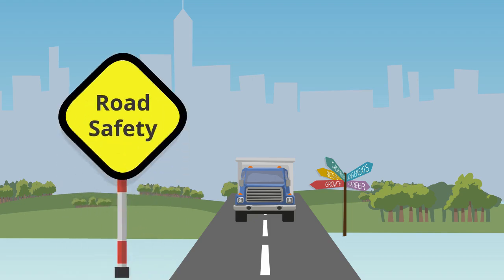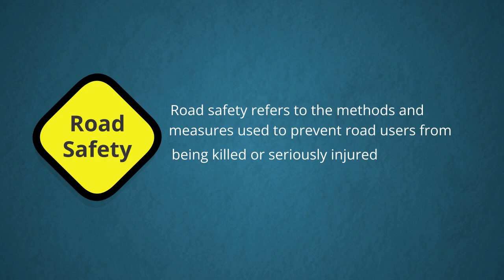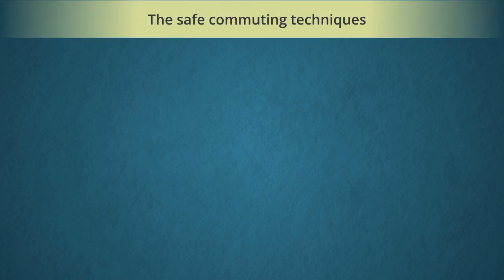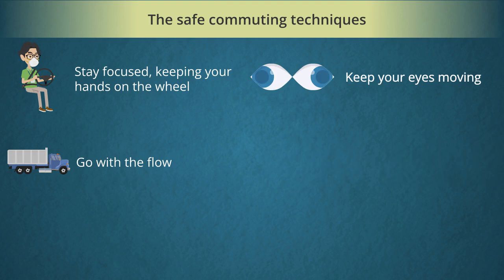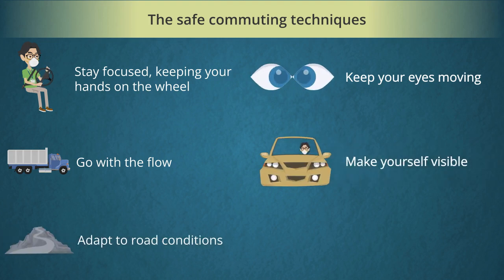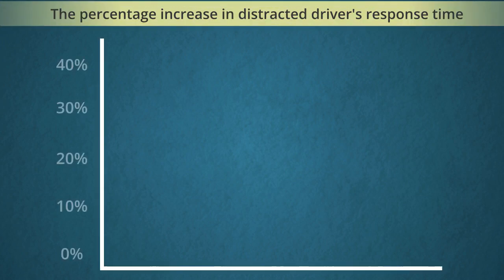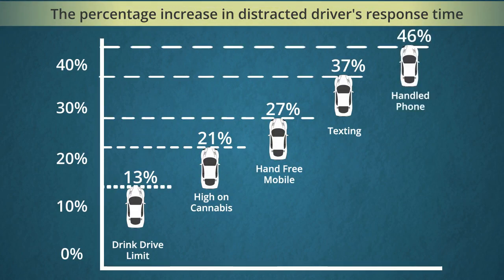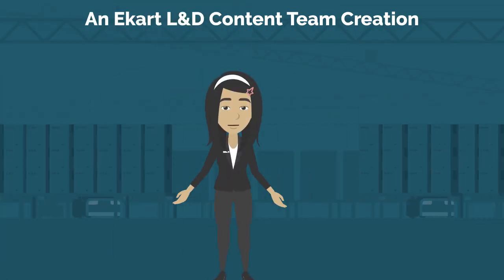Road safety refers to the methods and measures used to prevent road users from being killed or seriously injured. Safe commuting techniques include: stay focused, keep your hands on the wheel, keep your eyes moving, go with the flow, make yourself visible, adapt to road conditions, and familiarize yourself with traffic rules. Following these techniques helps avoid accidents and injuries. That's all friends — we have reached the end of the module. Thank you.